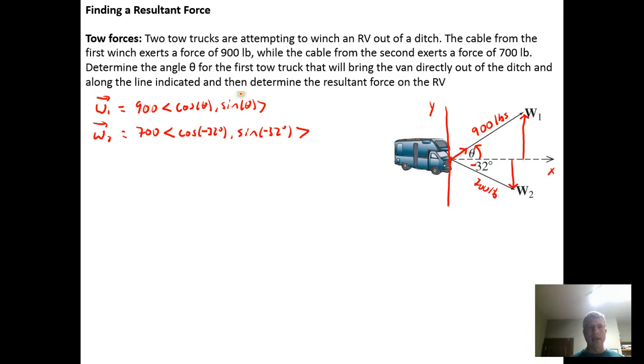So the idea is to find the vertical components. So 900 times the sine of theta, which is the angle we want to find, plus the 700 times the sine of negative 32 degrees. We need those vertical components to cancel out. So that means they need to equal zero.